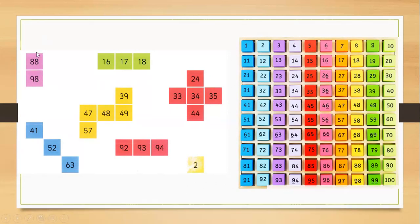Which number is missing? You have to look at this chart carefully and find the number. We have 88, and we have 98 — so which number is missing? 78. As you can see in the yellow box, you have to write 78 here. And if you have 98, the missing number is 88, shown in the yellow box.